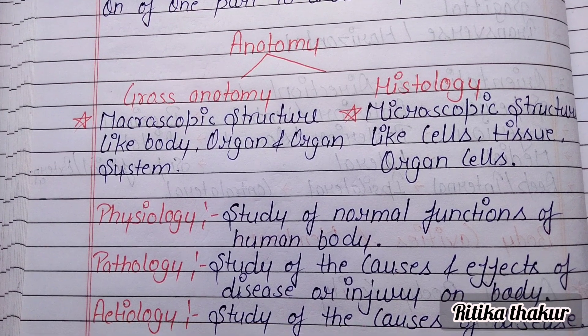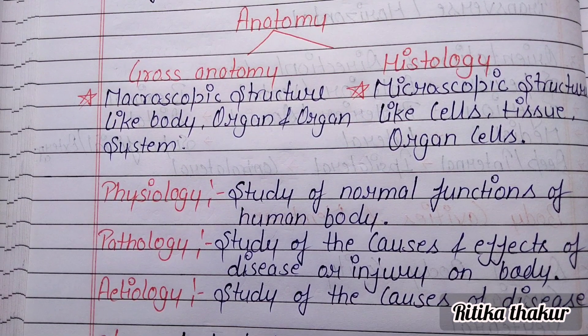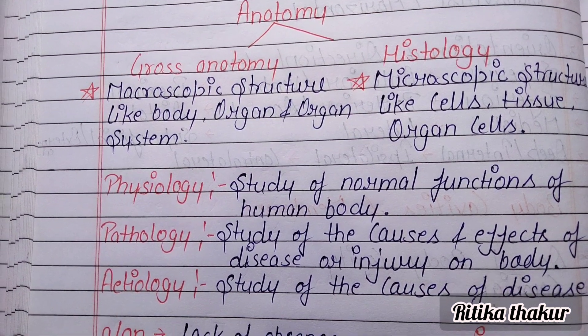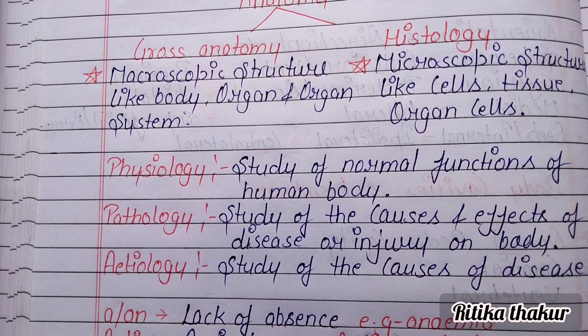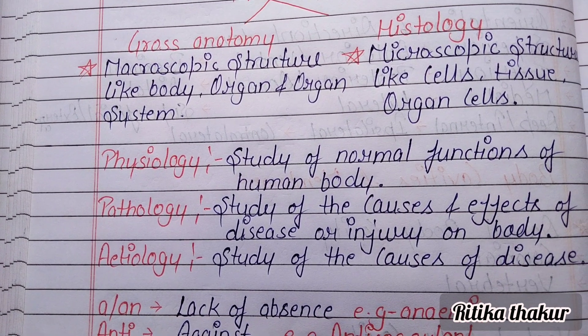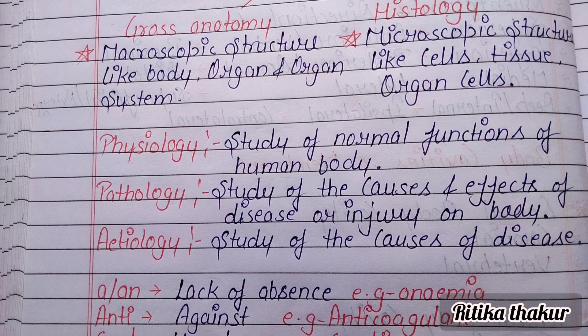Physiology is the study of normal function of the human body. Pathology is the study of the cause and effect of disease or injury on the body. Etiology is the study of the cause of disease.